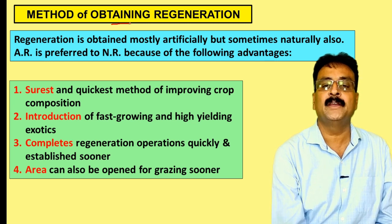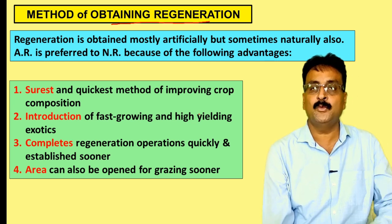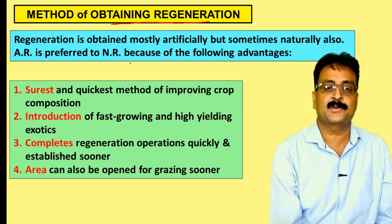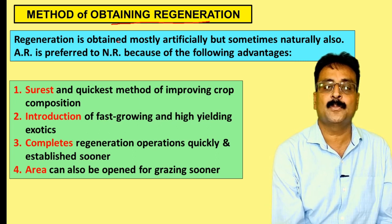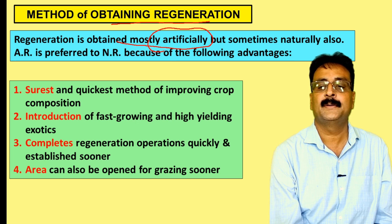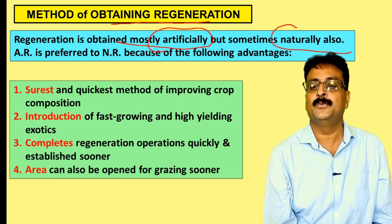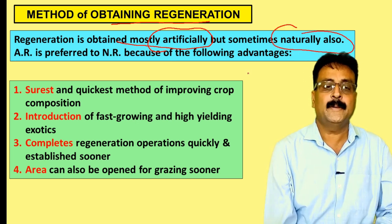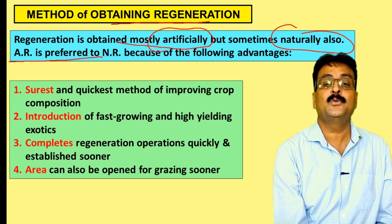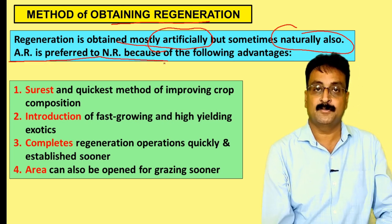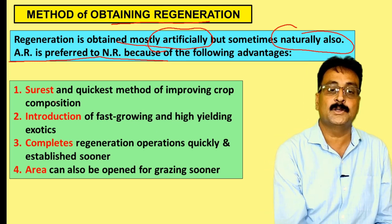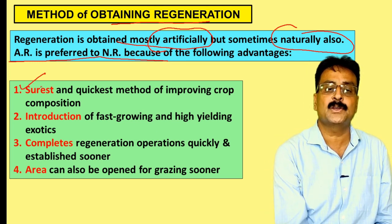Regarding methods of obtaining regeneration in clear felling system: regeneration is obtained mostly artificially, and sometimes naturally. Artificial regeneration is preferred because it is the surest and quickest method of improving crop composition.